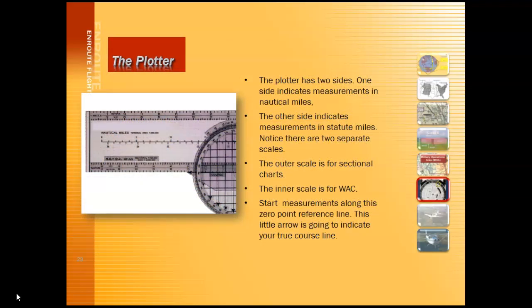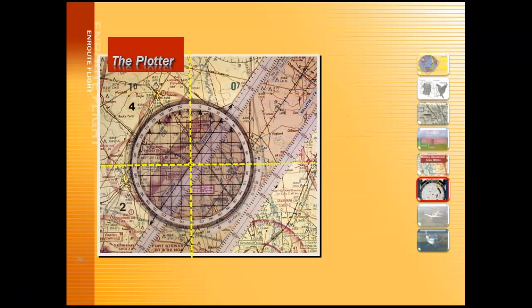Next we need to get familiar with the navigational plotter. The plotter has two sides: one indicates measurements in nautical miles and the other in statute miles. There are two separate scales — the outer scale is for sectional charts and the inner scale is for world aeronautical charts. When doing cross-country planning, we'll use the sectional chart scale. It's very important to identify the correct scale when measuring distance between checkpoints or between your departure point and your destination. You start measurements along the zero point on the reference line, and this little arrow indicates your true course.